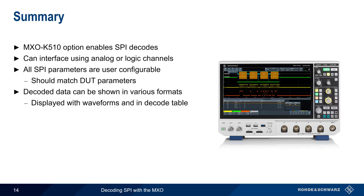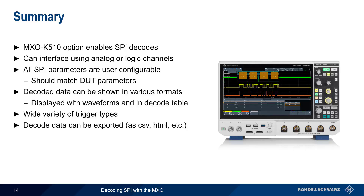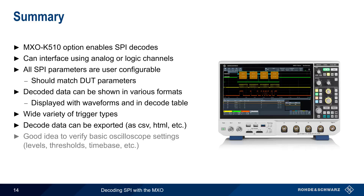The MXO also supports a wide variety of trigger types for serial data, and decoded serial data can be exported in a variety of formats. Finally, remember that it's a good idea to check basic oscilloscope settings such as levels, thresholds, and time base before starting decodes. This concludes our presentation, Decoding SPI with MXO Series Oscilloscopes. If you'd like to learn more about serial protocols, decoding serial signals, or Rohde & Schwarz oscilloscopes, please see the links in the video description.